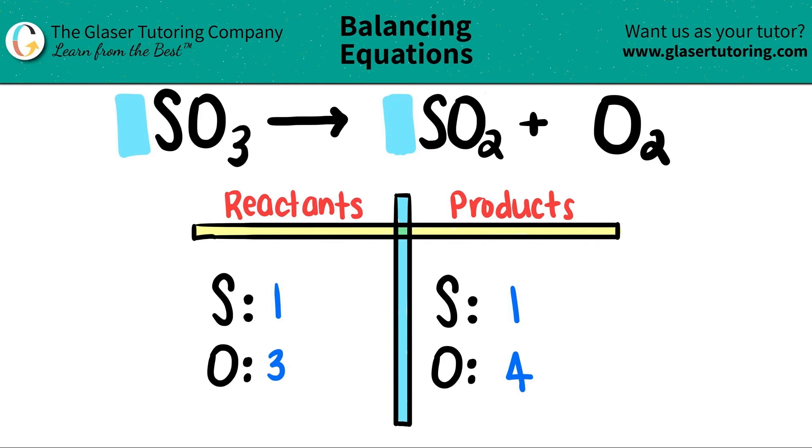Now, instead of them being both one, I can get them to being both two. This is just guessing and checking. One times what will get me to two? Yeah, one times two. And the number that I say is the coefficient that goes in the front.